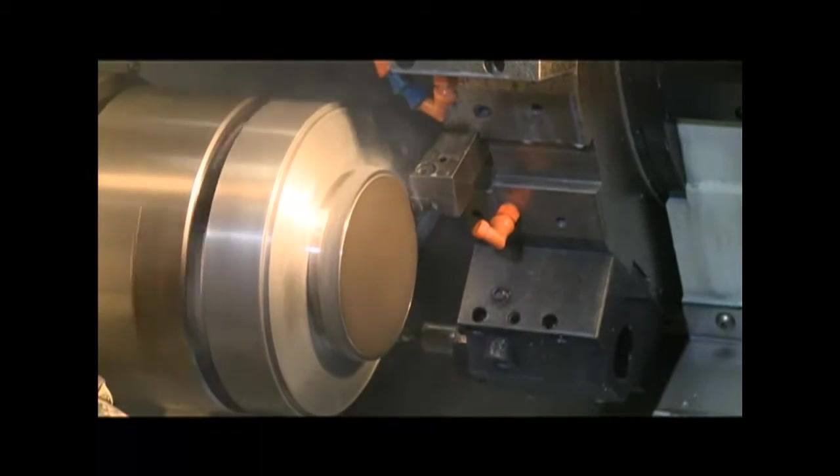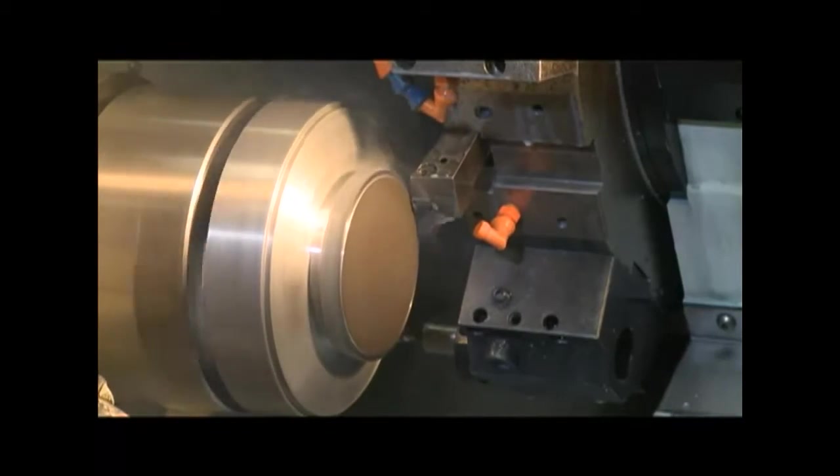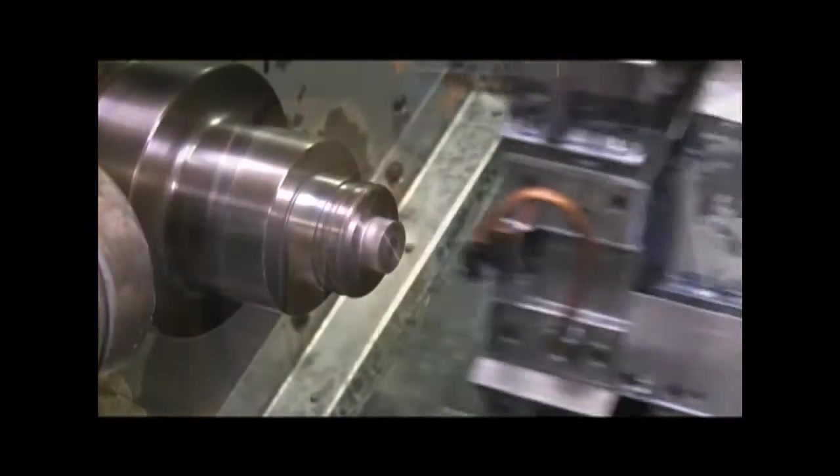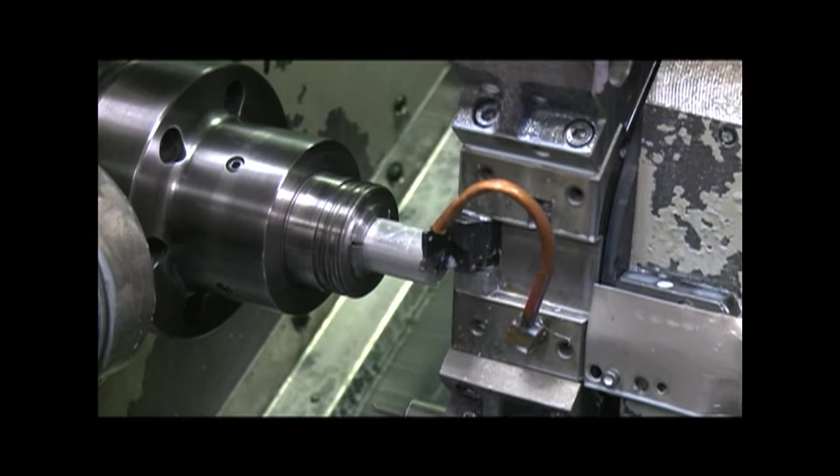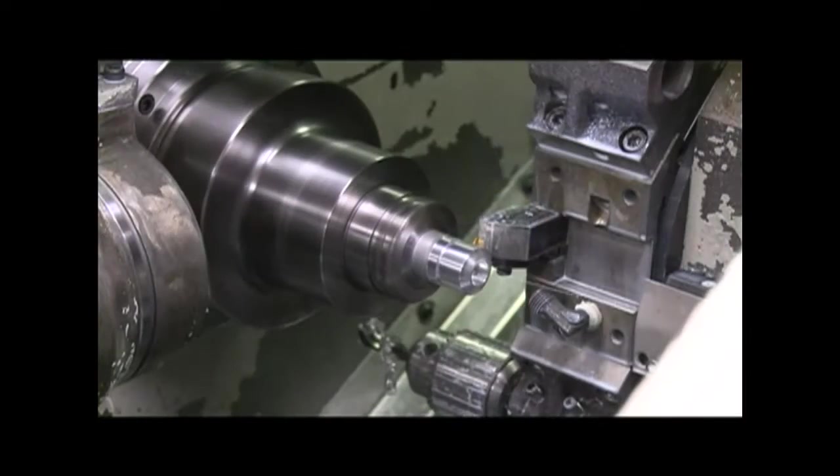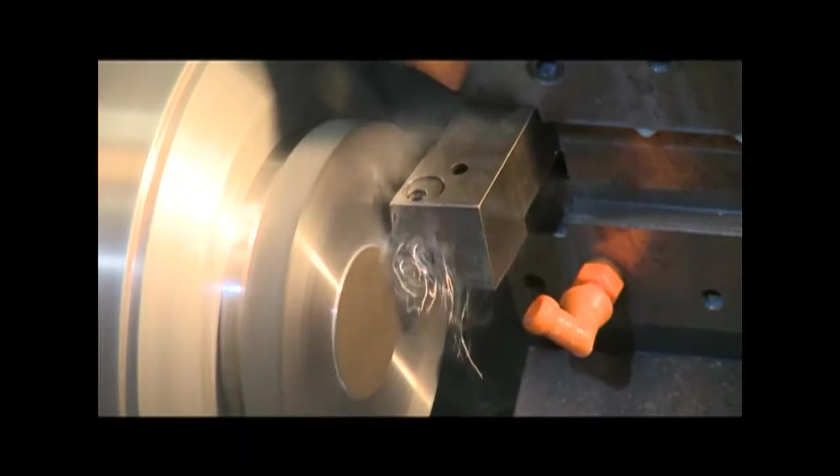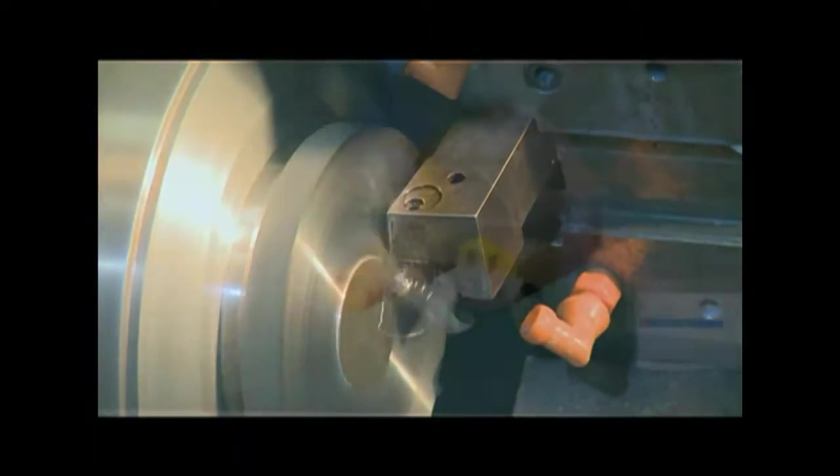KAF Manufacturing's turning department is one of a kind. We can bar feed and chuck diameters as small as one millimeter. The largest diameter we can bar feed or bar pull is 3 inches. For chucking work, we can chuck a 15 inch diameter and swing a 21 inch diameter.